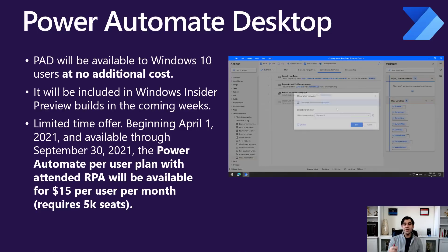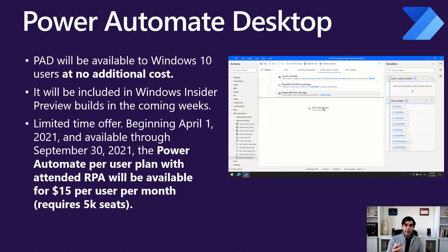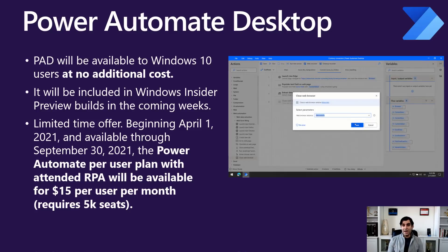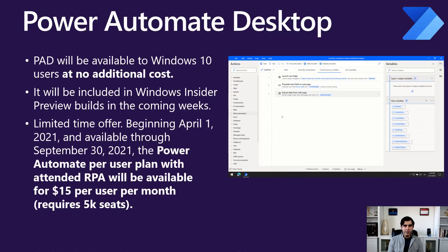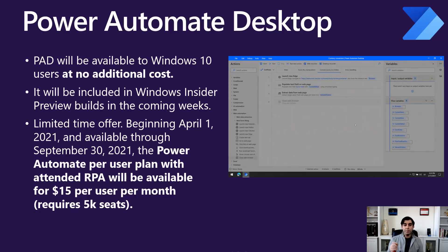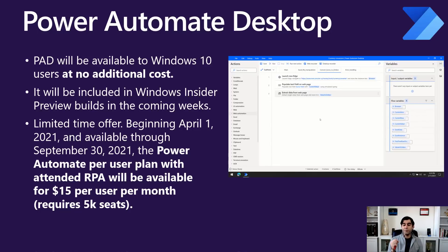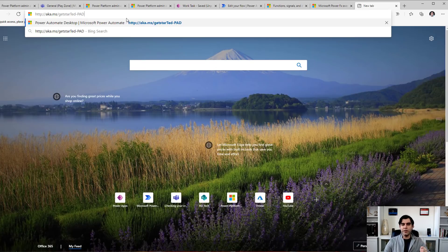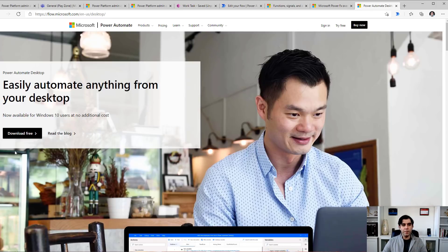Power Automate Desktop will be available to Windows 10 users at no additional cost, and will be included in Windows inside Preview Builds in the coming weeks. Important to note: although Power Automate Desktop is available for free, this is the attended version — you won't be able to call desktop flows from Cloud Flows, for which you'll need the full license. Similarly, if you want to run automations in unattended mode — which is best practice for enterprise-grade scenarios — you would still need the full license.